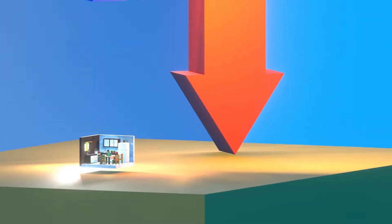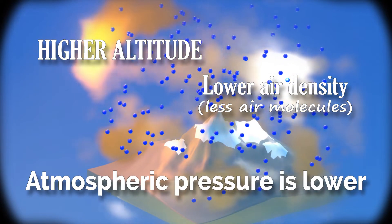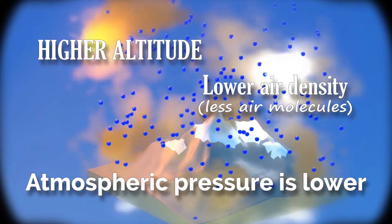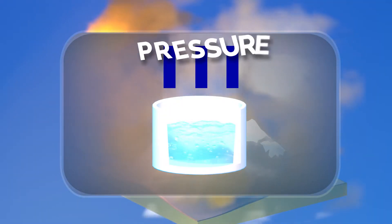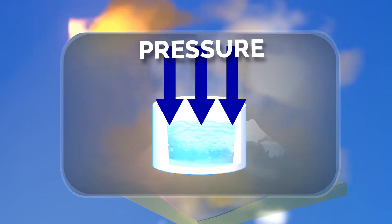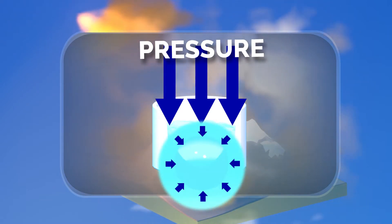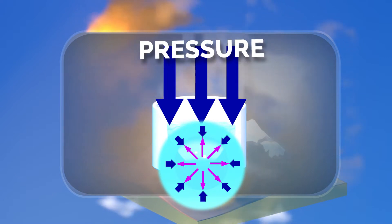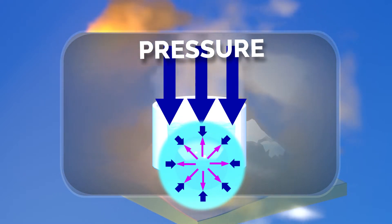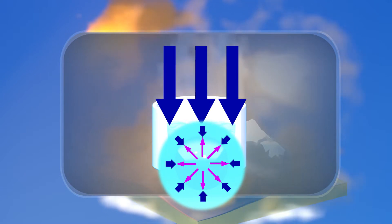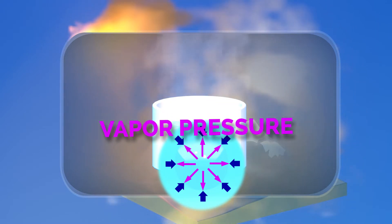If we go up in the mountains, the air becomes less dense, so the atmospheric pressure is reduced because the air weighs less. Now we know that there is a pressure pressing on the liquid from above. Forming vapor bubbles requires a pressure exerted by the vapor, counteracting the atmospheric pressure. This is what keeps bubbles from collapsing. This pressure is called vapor pressure, or saturated vapor pressure.